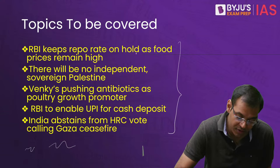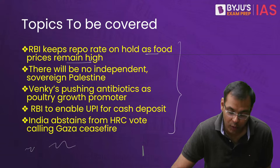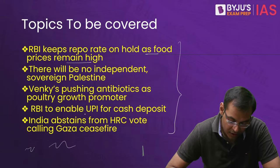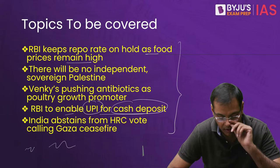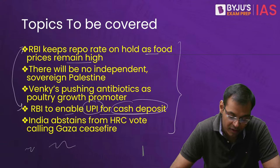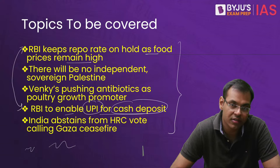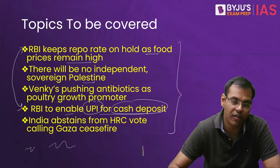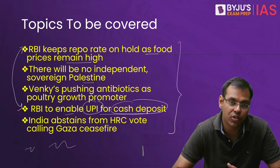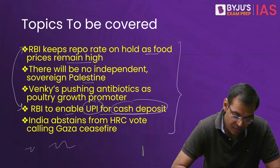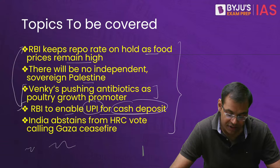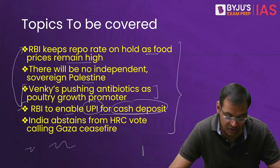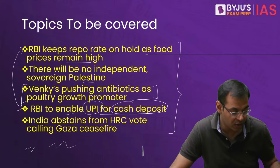The first topic is RBI keeps repo rate on hold as food prices remain high. RBI is also to enable UPI for cash deposits — Unified Payment Interface for cash deposit. These two articles, although not related, are important for GS3 Economics. Then we have a couple of articles on international relations — the Israel-Hamas Palestine issue — and an article on antibiotics as poultry growth from OTA.